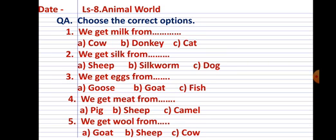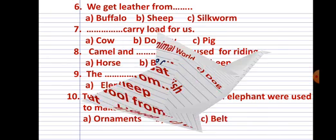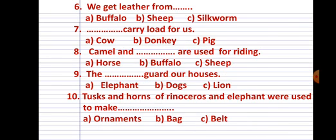Choose the correct option. If you don't know, if you are confused, then search in your textbook. Six: we get leather from... Options are a) buffalo, b) sheep, and c) silkworm. If you don't know the answer, search in your textbook.